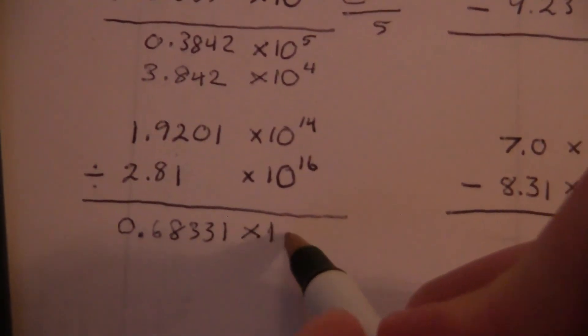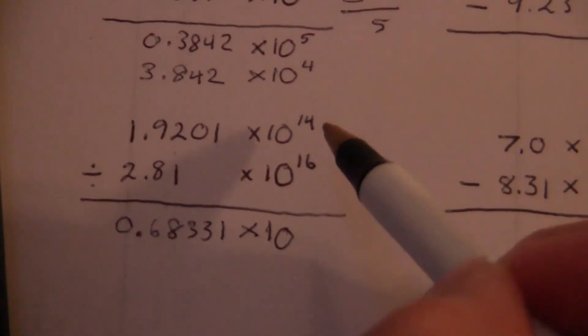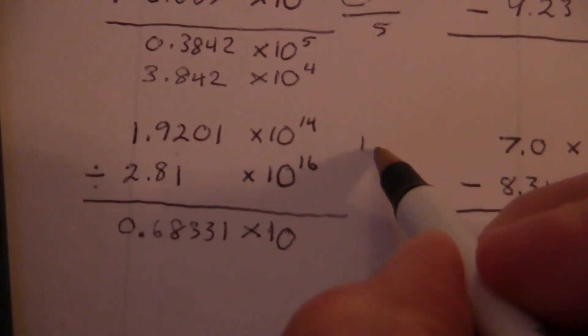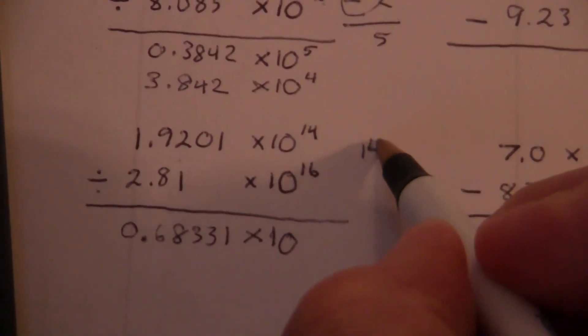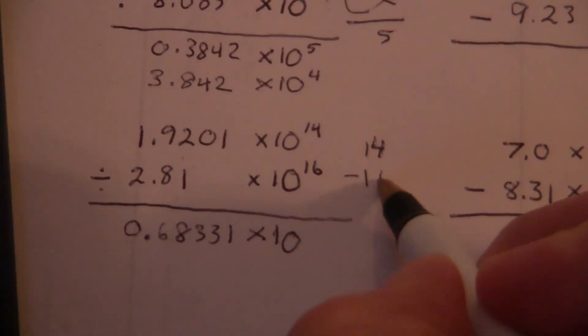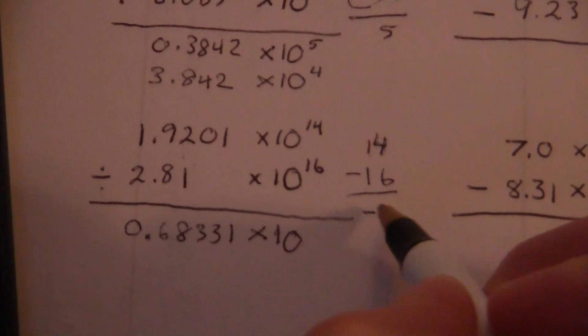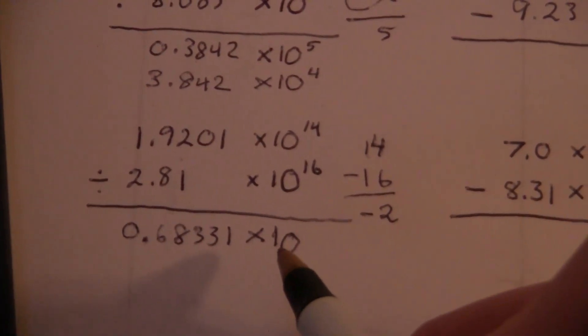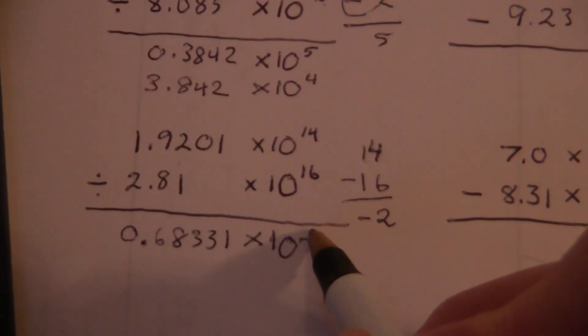Now, this will be times 10 to, what are we going to do here? We're dividing, so we subtract. We have 14 minus 16, so that gives us negative 2. Times 10 to the negative 2.